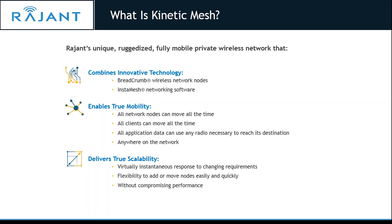This really allows for high density. If you're running an application passing data on a 2.4 GHz frequency and run into interference, it will automatically and instantaneously reroute to the 5 GHz frequency to continue passing that data. Based on the RF environment at the time the packet needs to be transmitted, that's when the decisions are made with InstaMesh.